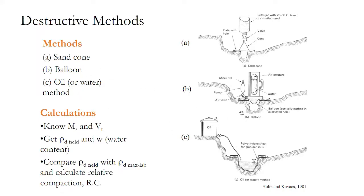In all destructive methods, we dig or excavate a hole and then fill it — either with sand for the sand cone test, with pressurized air connected to a balloon to determine the volume of the hole, or with a liquid whose known density allows volume calculation from its weight. We weigh the removed soil (ms) and then determine the volume of the hole. If we know the weight and the volume, weight divided by volume gives us the density.